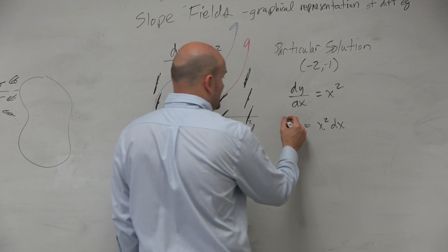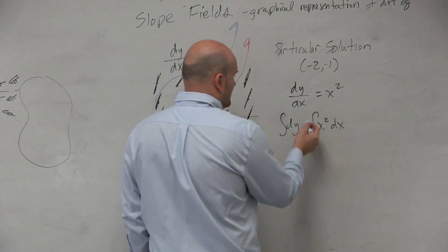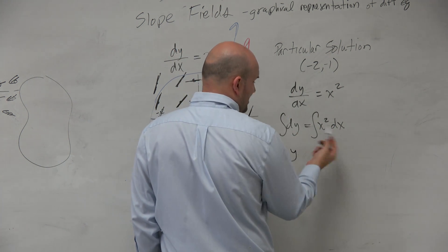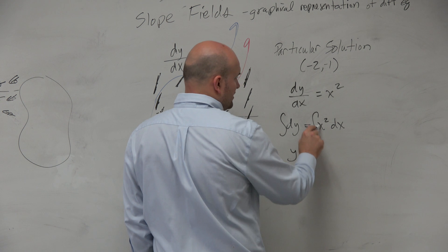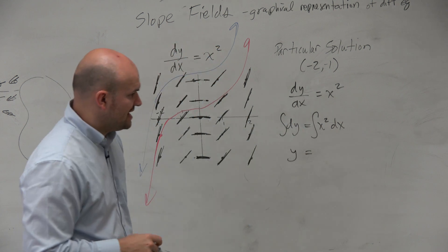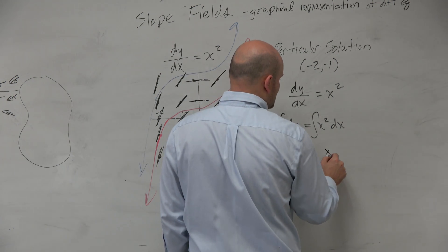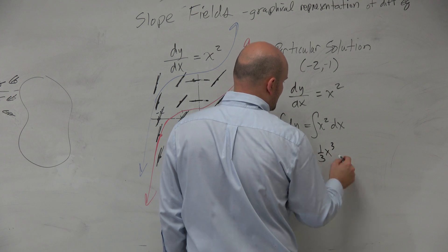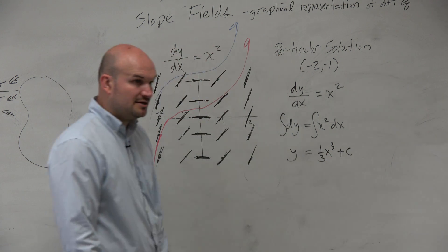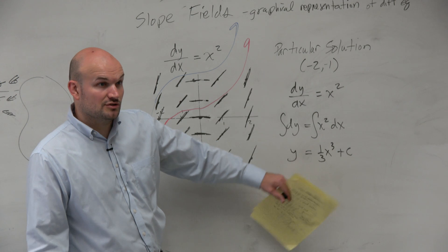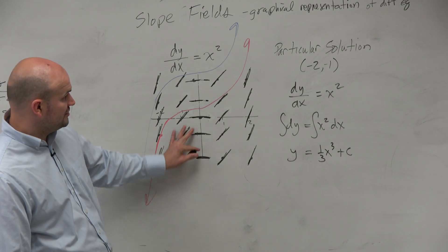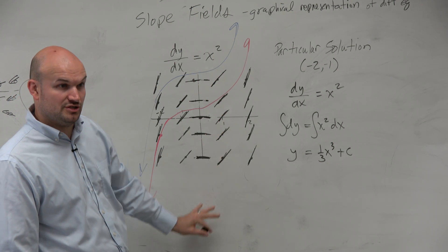right? Now I can integrate both sides. Integrate dy is just going to be y plus c, but we'll forget about that for now. Integrate x squared dx is going to be x cubed times 1 3rd. And then we'll use a general c right there. So that is our general solution. And that is basically the general solution of all of my possible solutions.